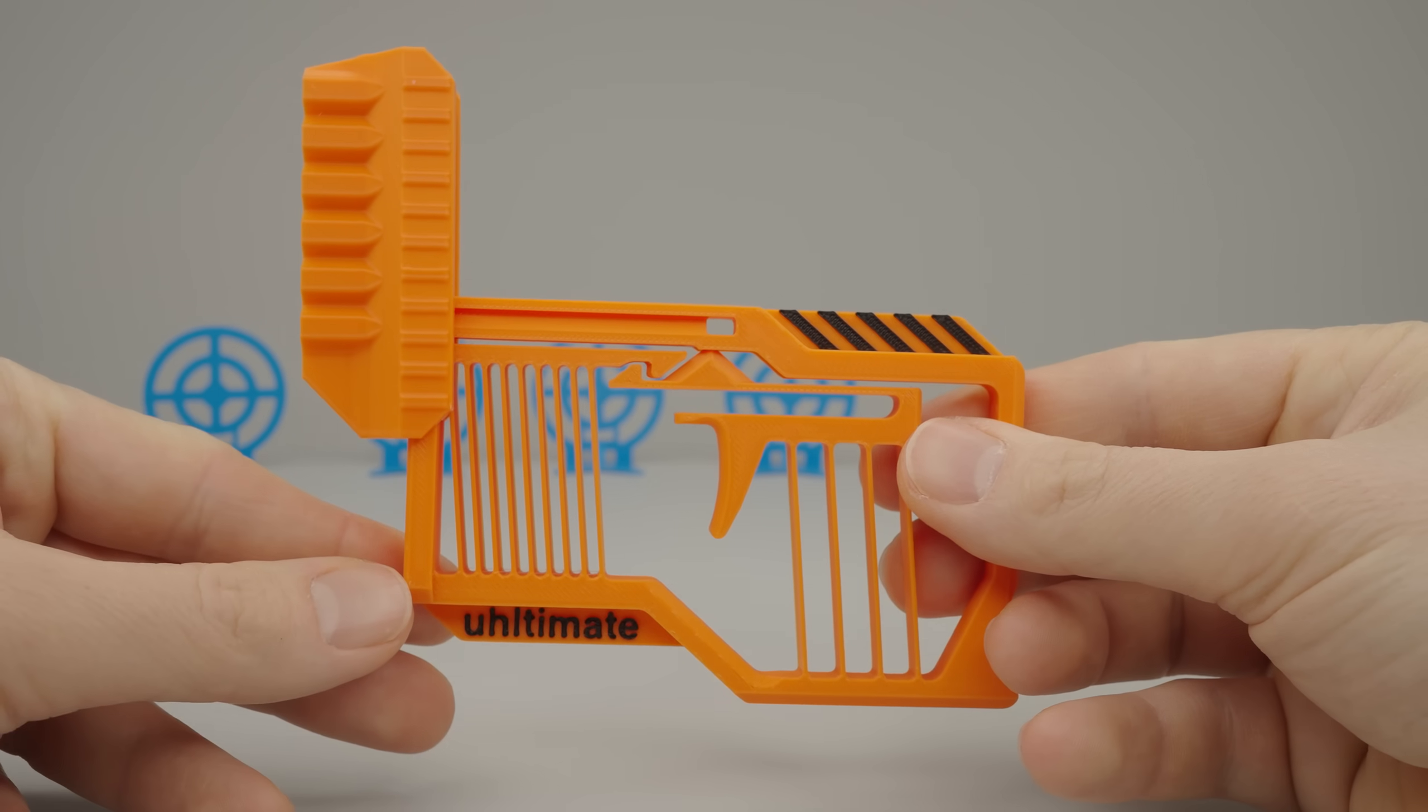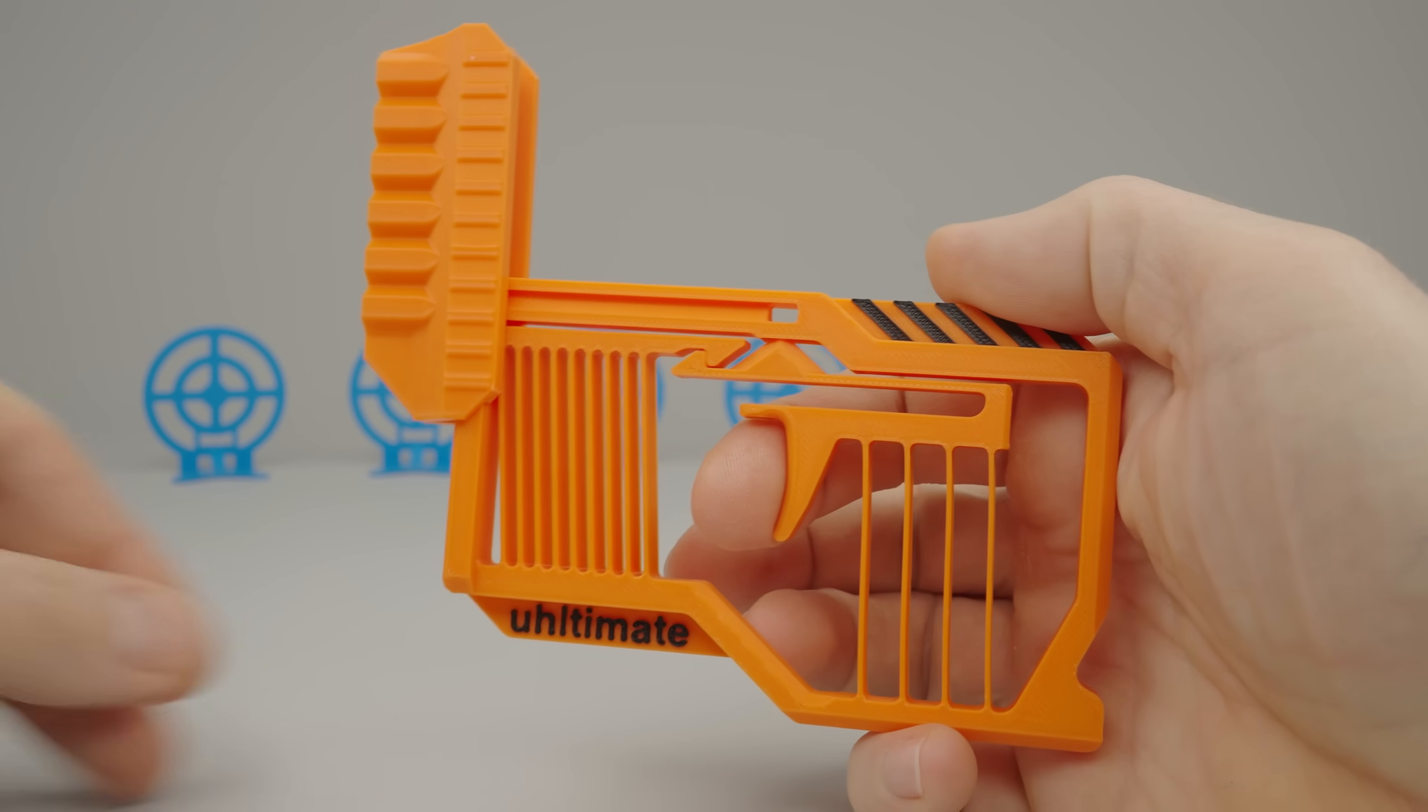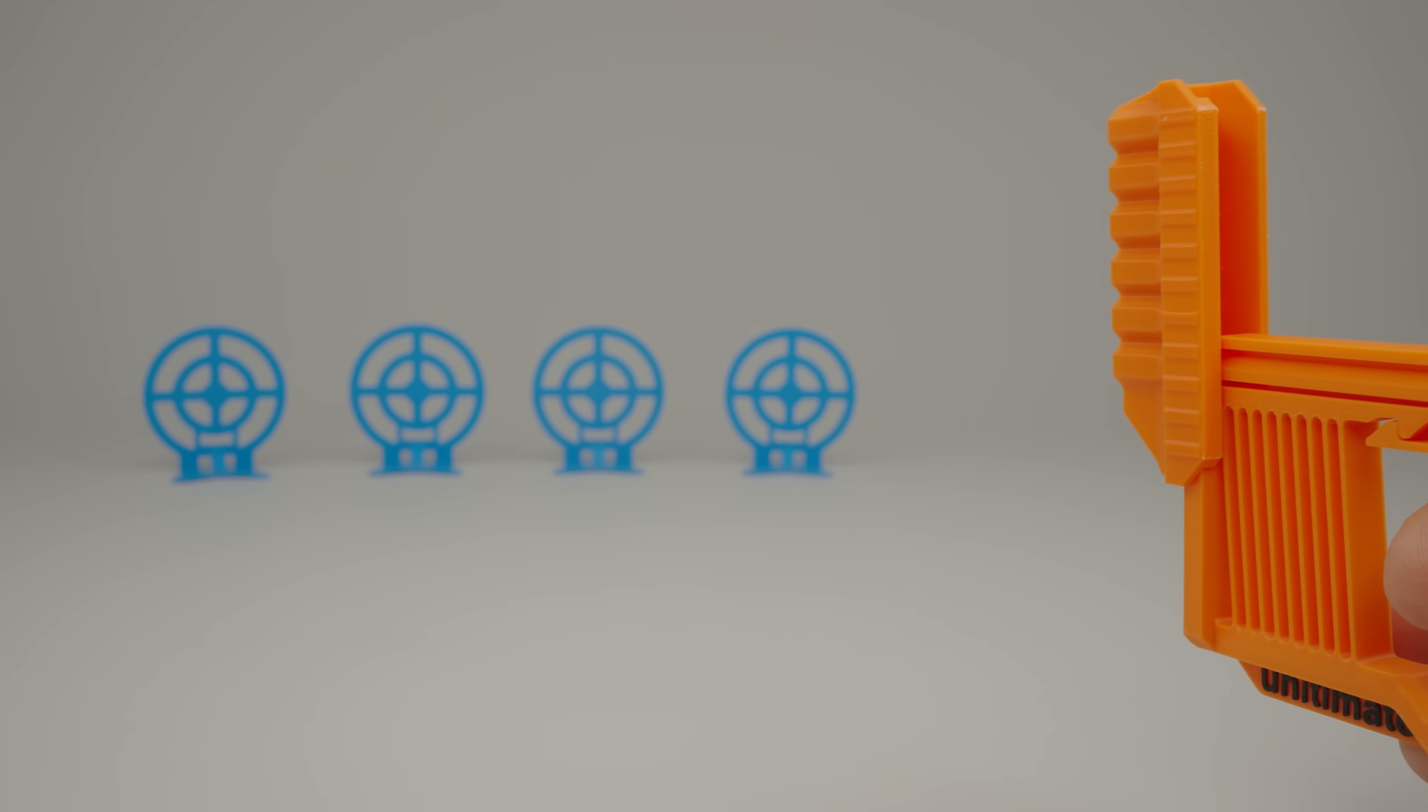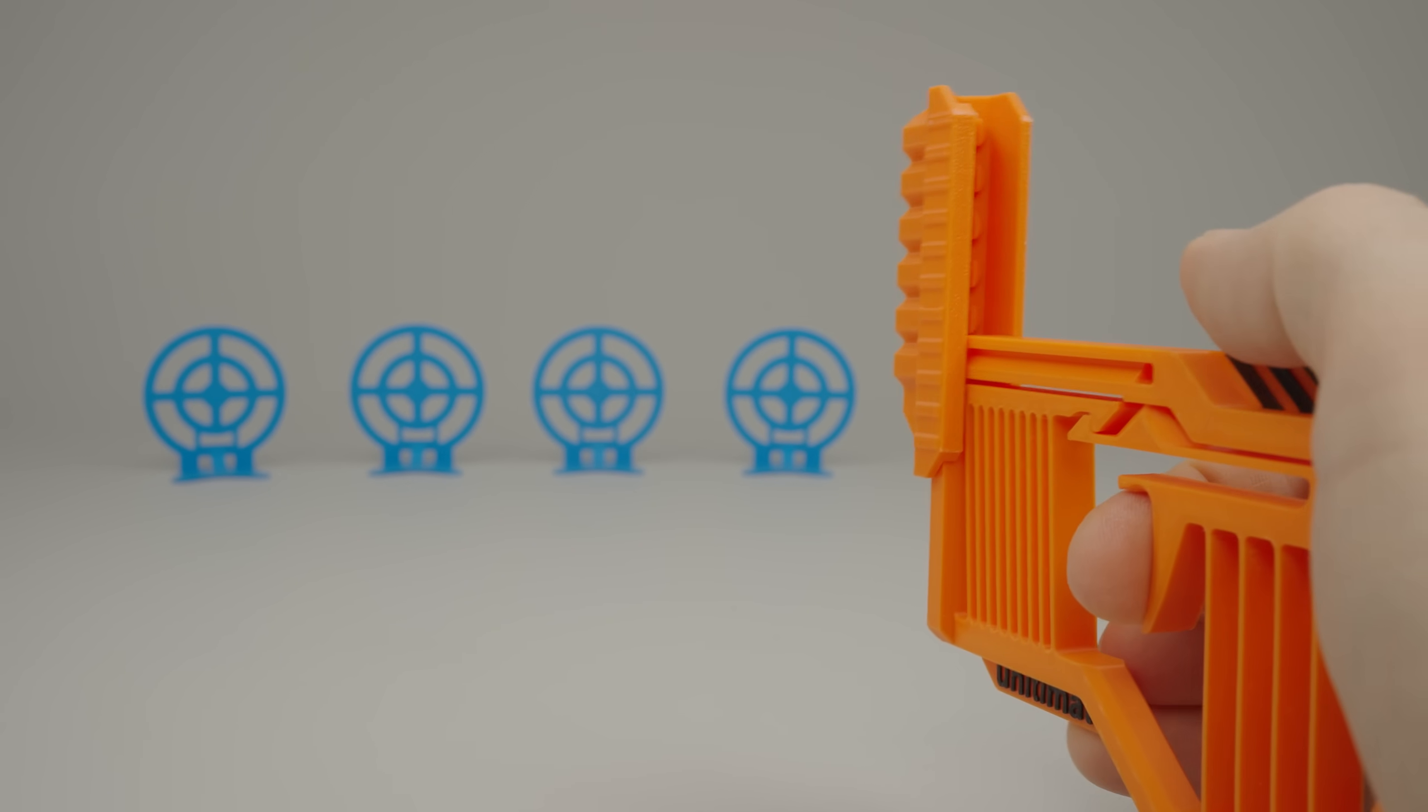Once all the targets are done and set up, we can start shooting again. With the strong blaster, the targets can be almost 3 meters away. But here, they're way closer. I just don't want to embarrass myself.